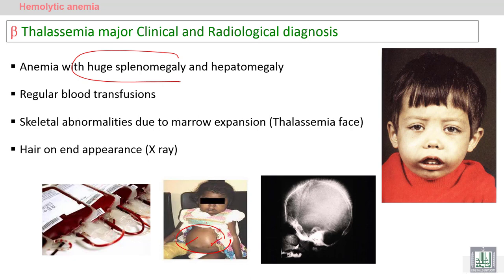The patient has moderate to severe anemia and needs regular blood transfusion — perhaps each week — because of the peripheral destruction of red blood cells. The bone marrow will try to compensate through erythroid hyperplasia, which leads to skeletal abnormalities. Clinically, you can see protrusion in the face, called thalassemic face or sometimes mongoloid face.